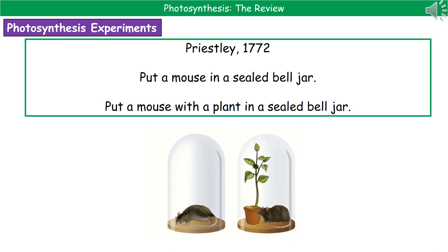Priestley — obviously, we're talking about a different time — took a mouse and put it inside a sealed bell jar, and as surprising as it may be, the mouse died. He then did exactly the same thing but this time had a little plant in there as well. The mouse still died, but it took longer. So he came up with the idea that the plant is making the oxygen, or something that keeps the mouse alive.